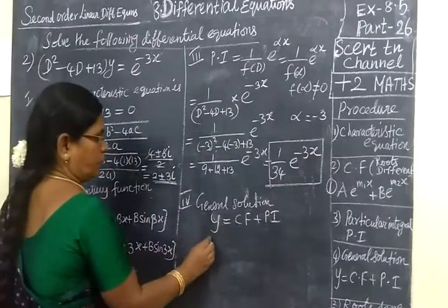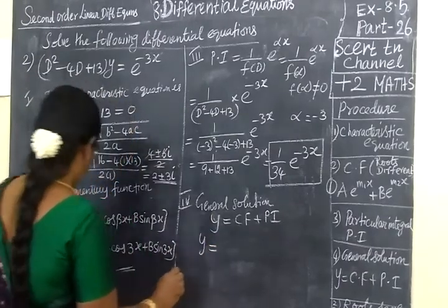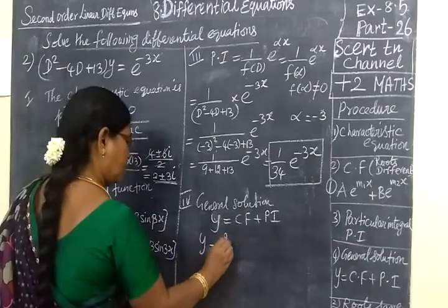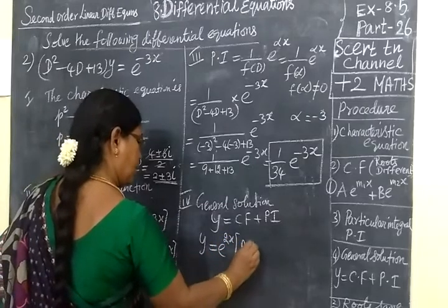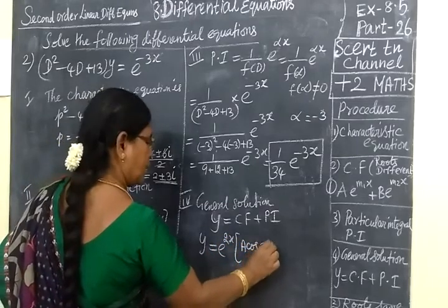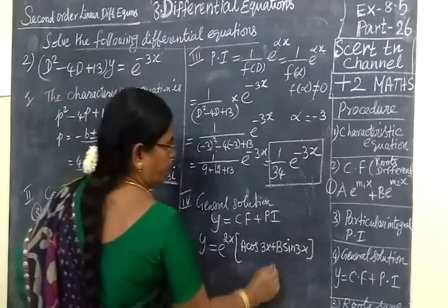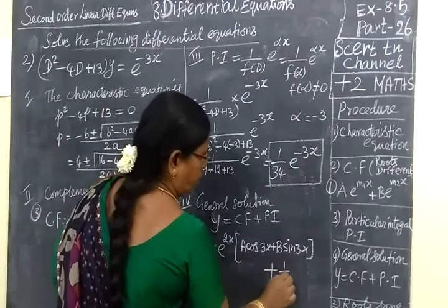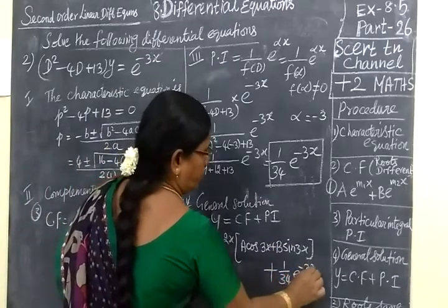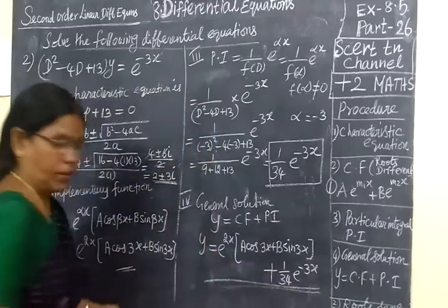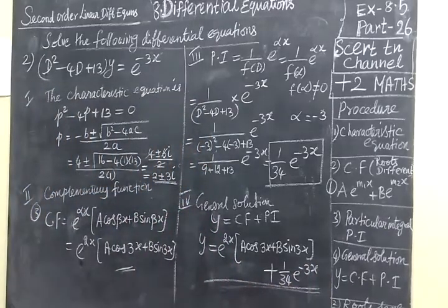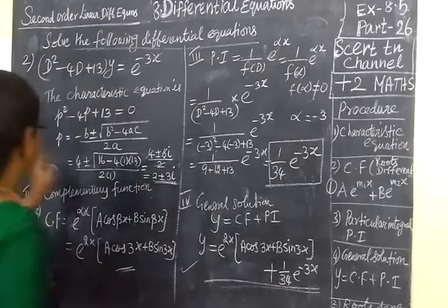Now you substitute in general solution. Y is equal to CF plus PI. E power 2x, then a cos 3x plus b sin 3x plus 1 by 34 e power minus 3x. Now we check the answer for the second one.